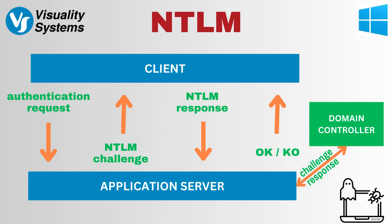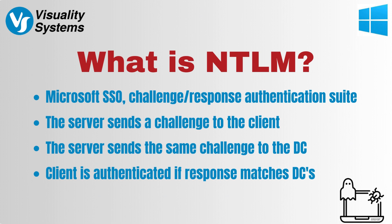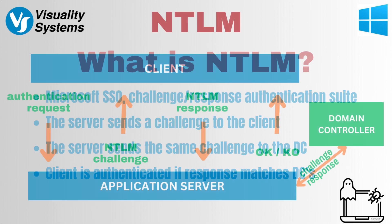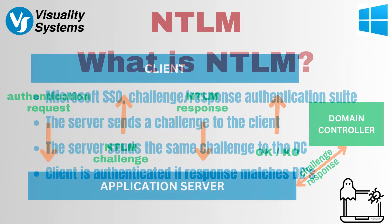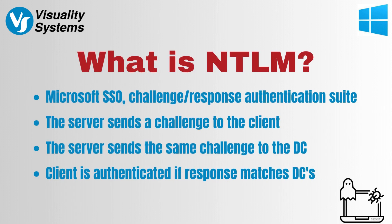The client passes the plain text username to the server. The server responds with a challenge by sending back a random number. The client then creates a hash of the password and encrypts the server's random number with that password hash. The server then sends the same challenge response and username to the domain controller. The domain controller retrieves the password from its database, creates an identical password hash, and uses it to encrypt the challenge. The information is then returned to the server, which compares the encrypted challenge from the client against the encrypted challenge from the domain controller. If they match, the user is authenticated.